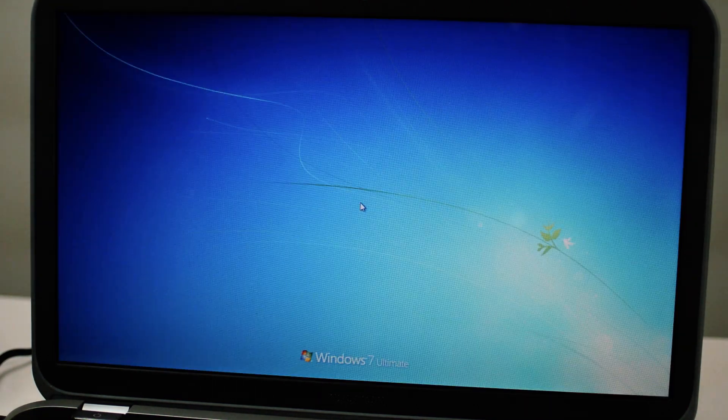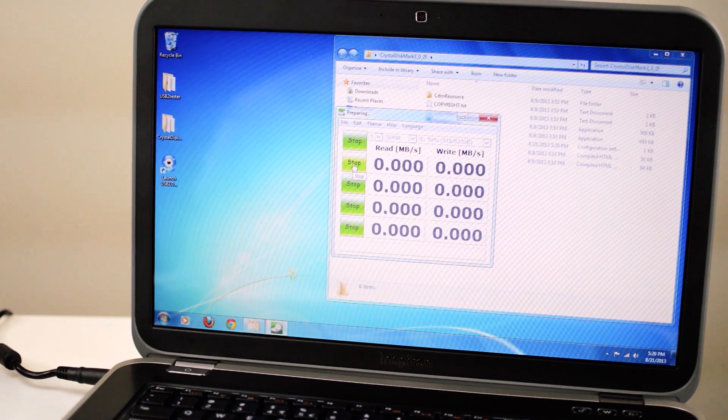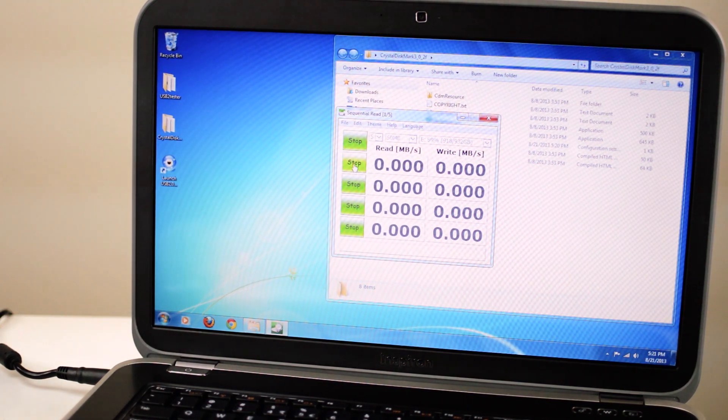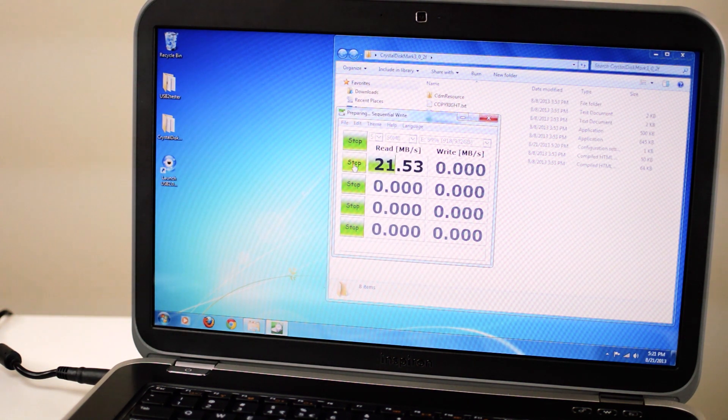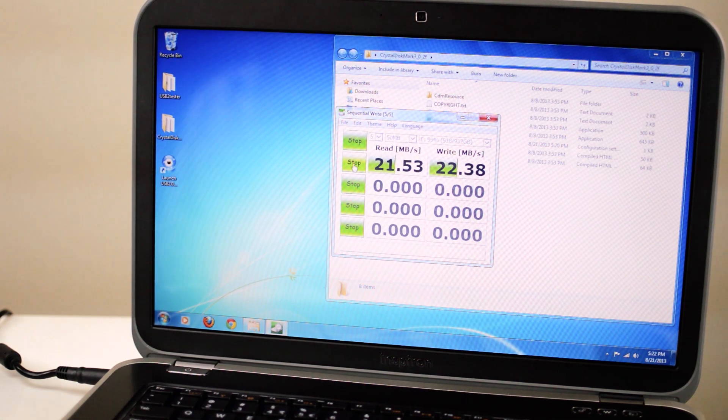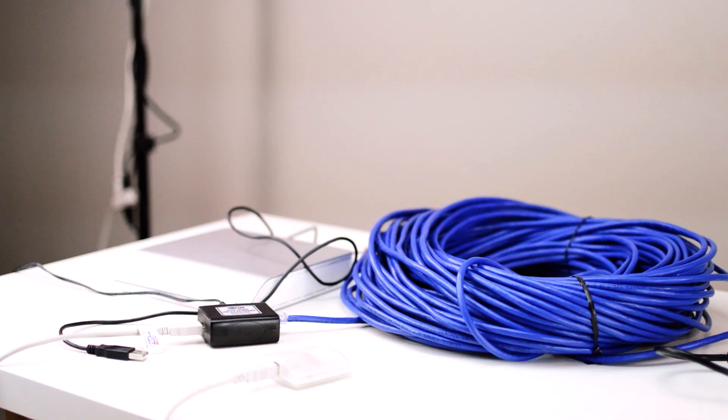So after installing the drivers and rebooting, we plug it in, and launch Crystal Disk Mark. We will again do a 5 pass 50 megabyte test. We get a read speed of 21.53 megabytes per second and 22.38 megabytes per second write.